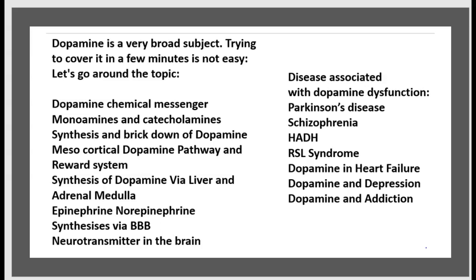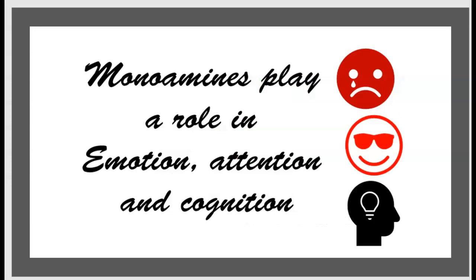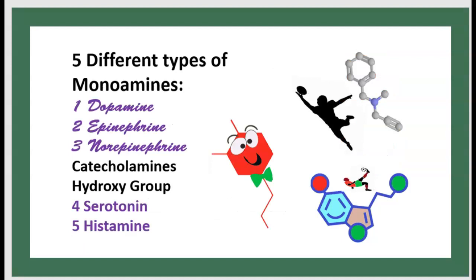Also covered: dopamine in heart failure, depression, and addiction. Dopamine is a monoamine. Monoamine means this radical — there is an aromatic group and an amine radical. Monoamine plays a role in emotion, attention, and cognition. There are five different types of monoamine.